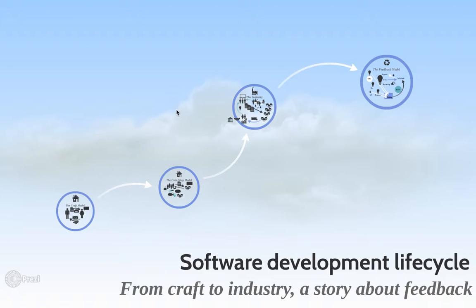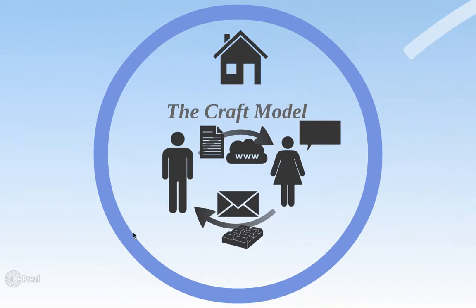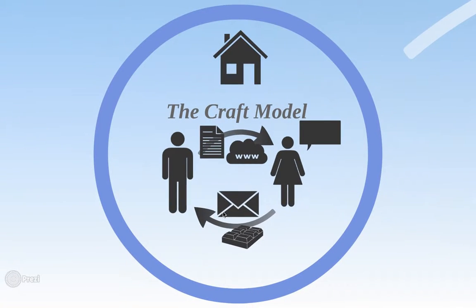So we start with the craft model. You've got a customer and you've got one developer, for instance — the most simplest feedback loop you've got. They send some emails to ask for code to be written, maybe a little website. And they kind of iterate, they talk to each other, they iterate. It's a little sort of craft.